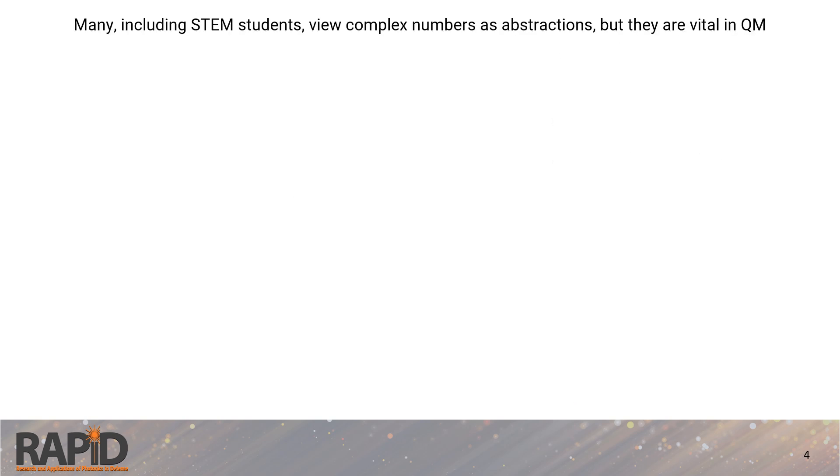Today, many, including STEM students, similarly see complex numbers as abstractions. But they are essential in, for example, quantum mechanics. Indeed, the Schrodinger equation which governs quantum mechanics systems inherently involves the imaginary unit i. This is necessary and unavoidable.